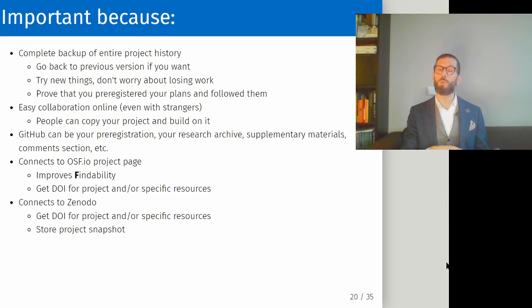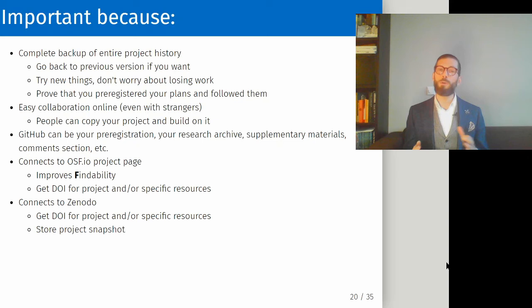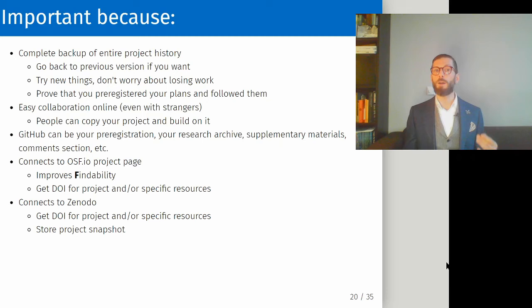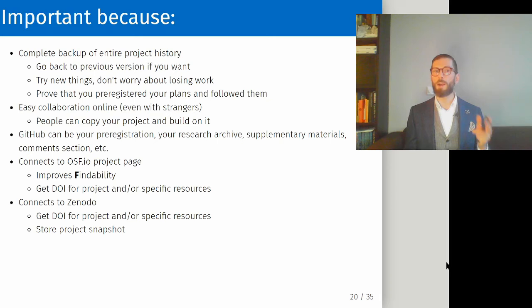It is also easy to connect GitHub to an Open Science Framework project page. The Open Science Framework is a well-known web service for open science projects. You can create a project there and connect it directly to your GitHub repository. Connecting your GitHub repository to the Open Science Framework improves the findability of your research. The OSF also allows you to get a DOI, a Digital Object Identifier, for your project and even specific resources within it. You can also connect GitHub to Zenodo to improve findability, get a DOI, and store a project snapshot — like a time capsule of your GitHub repository — which keeps it extra safe.